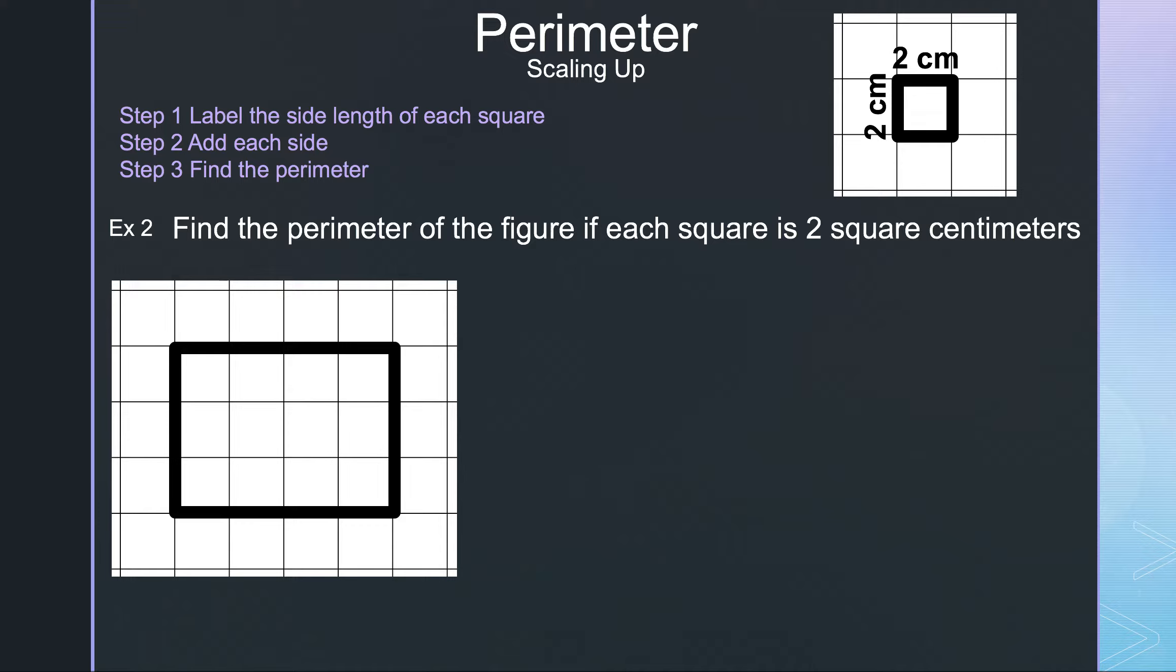It's the same, so that means each side length of the square is 2. We can write each 2 on each side length of the square for the grid. Now we can add them together.